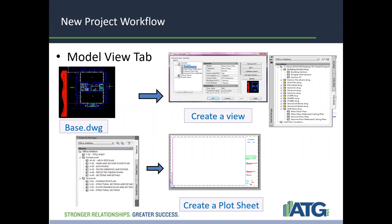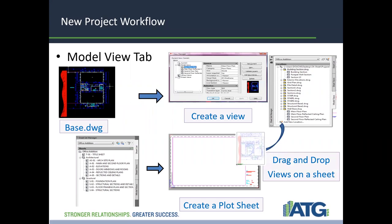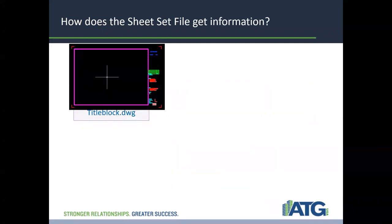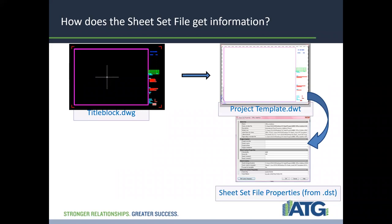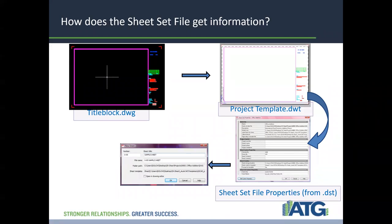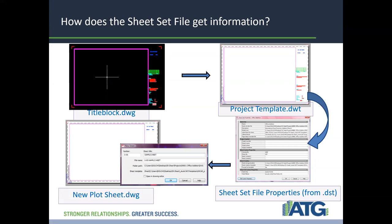Then you create a plot sheet. You can simply drag and drop views onto a sheet to create that plot. How does the sheet set file get information? It starts with your title block .DWG, then moves on to your project template .DWT, then your sheet set file properties from the .dst file, and continues on for your new sheet, which you can name and number right there for the new plot sheet drawing.